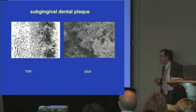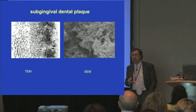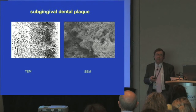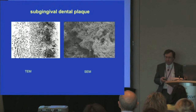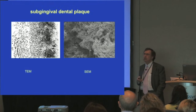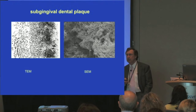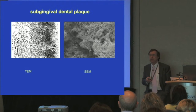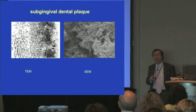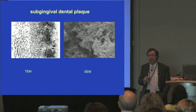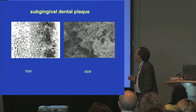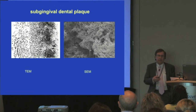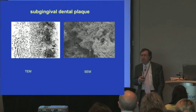But in the oral cavity, of course, we have the only non-shedding surface in the body, namely the teeth. Every other surface on the body is a shedding surface, so that when bacteria colonize either the internal or external shedding surfaces, once the bacteria reach a critical concentration, the cell dies and is shed, replaced by a new cell from the basal layer of the epithelium. So it's very difficult to form biofilms on shedding surfaces.